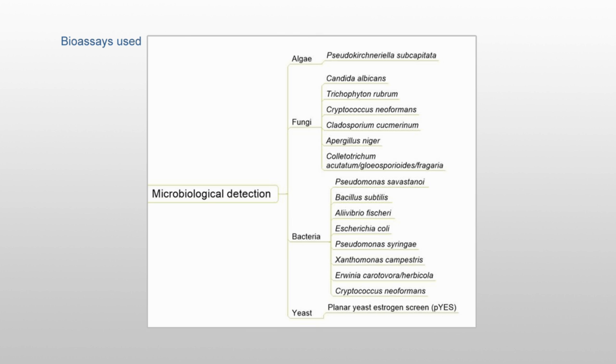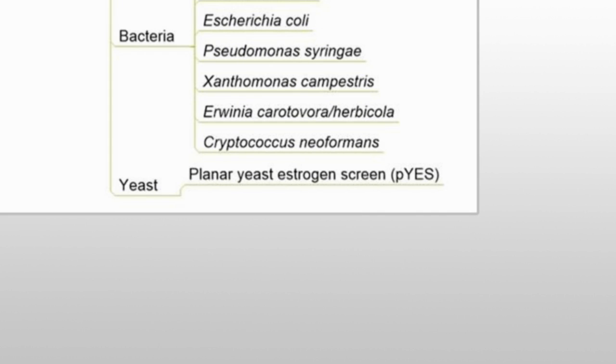To discover estrogen-effective compounds, the Planar Yeast Estrogen Screen, PES, is selected out of the many bioassays reported so far.